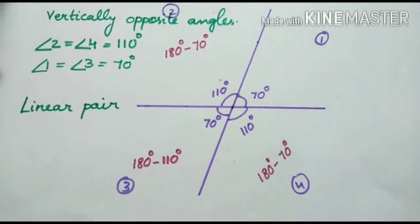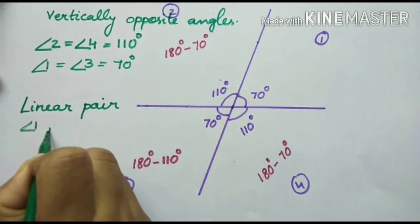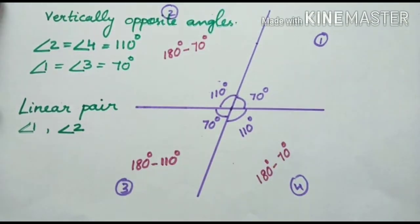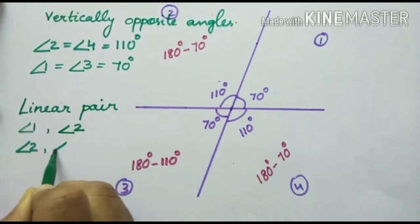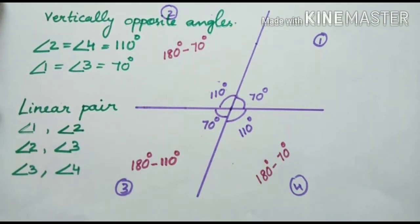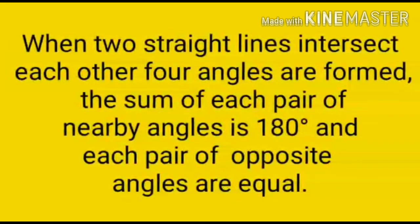Let us see the linear pairs. Which are the linear pairs? Angle 1 and angle 2 are a linear pair, because their sum gives 180 degrees. Angle 2 and angle 3 are a linear pair, since their sum gives 180 degrees. Angle 3 and angle 4 are a linear pair. And angle 4 and angle 1 are also a linear pair. So we conclude: when two straight lines intersect each other, four angles are formed and each pair of opposite angles are equal.